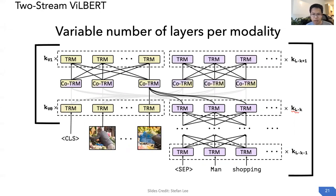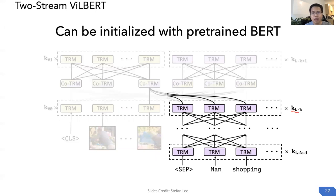The two-stream model also provides a lot of flexibility to encode each modality differently. For example, we can have a variable number of layers per modality, corresponding to our motivation of having less encoding for the vision branch. Our model can be initialized with the pre-trained BERT model, allowing us to transfer knowledge from the learned text corpus.